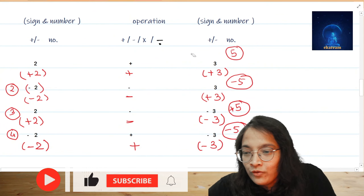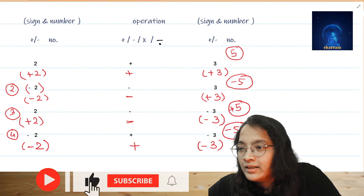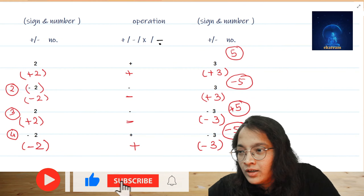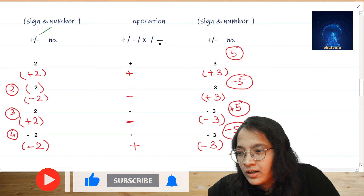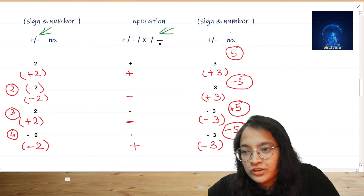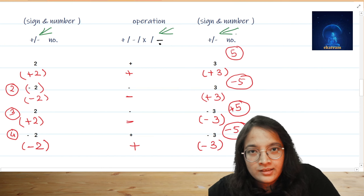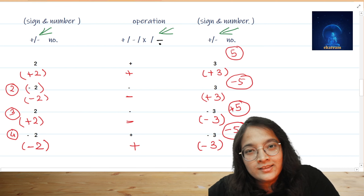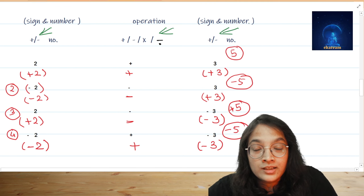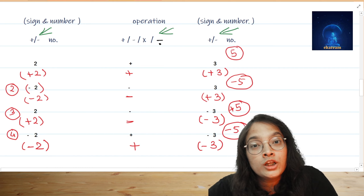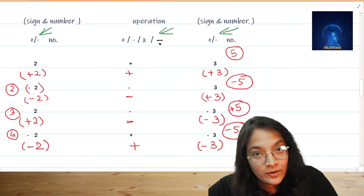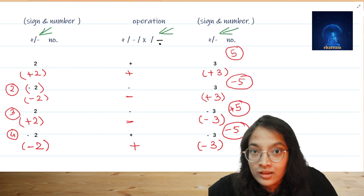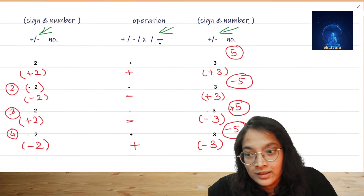As you can see over here, there are 3 signs in the equation. The first sign is with the first number, there is an operation sign, and then there is a sign with the second number. This equation has 3 signs, and we are going to convert this equation into only 2 signs.